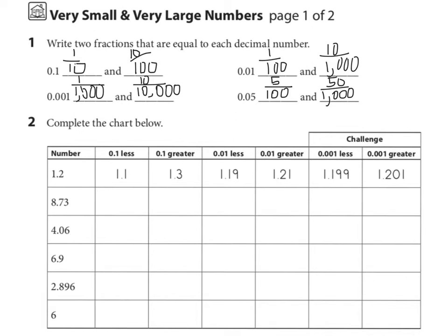Looking at number 2, complete the chart below. We have 1 and 2 tenths. One tenth less is 1 and one tenth; one tenth greater is one and three tenths. One hundredth less is one and nineteen hundredths; one hundredth greater is one and twenty-one hundredths. Now for eight and seventy-three hundredths: one tenth less — we have seven tenths, so one tenth less is six tenths — giving us eight and sixty-three hundredths. One tenth greater would be eight and eighty-three hundredths.